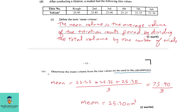Part D2: Determine the mean volume from the titration values to be used in the calculation. We are not going to use all values because they are not all within plus or minus 0.10 cm³. The values within that range are the fourth, fifth, and sixth readings. So we sum 25.25 plus 25.35 plus 25.30, divided by 3, giving 75.90 divided by 3, which gives a mean value of 25.30 cm³.